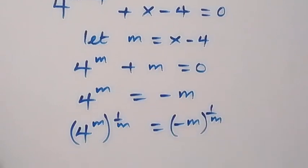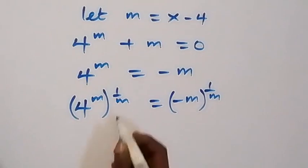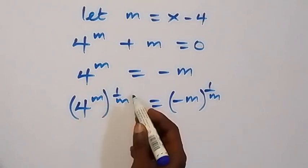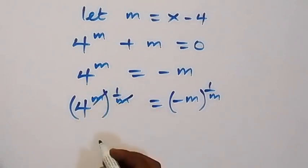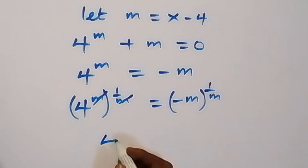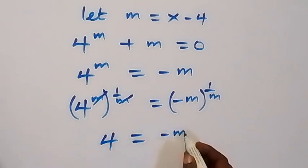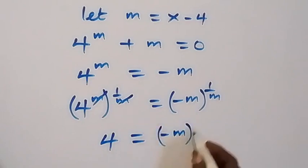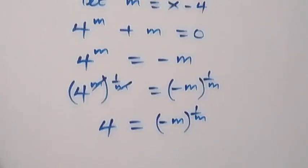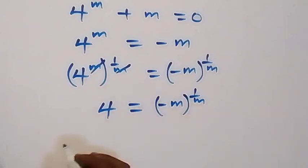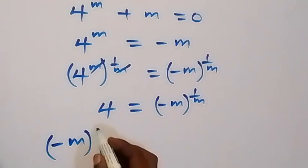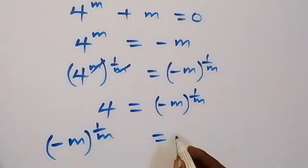Then in the next step, by the law of indices, these powers multiply and this m cancels with this m, so we are left with 4, which is equal to minus m raised to power 1 over m. Similarly, we can write this as minus m raised to power 1 over m, and is equal to 4.